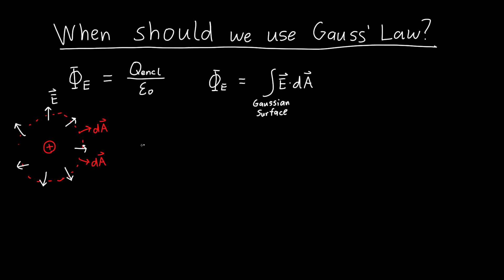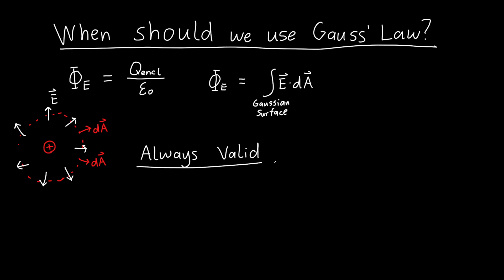It's important to note that Gauss's law is always valid — you can always make the statement that the flux equals the enclosed charge over epsilon naught. But importantly, it is not always easy to use.